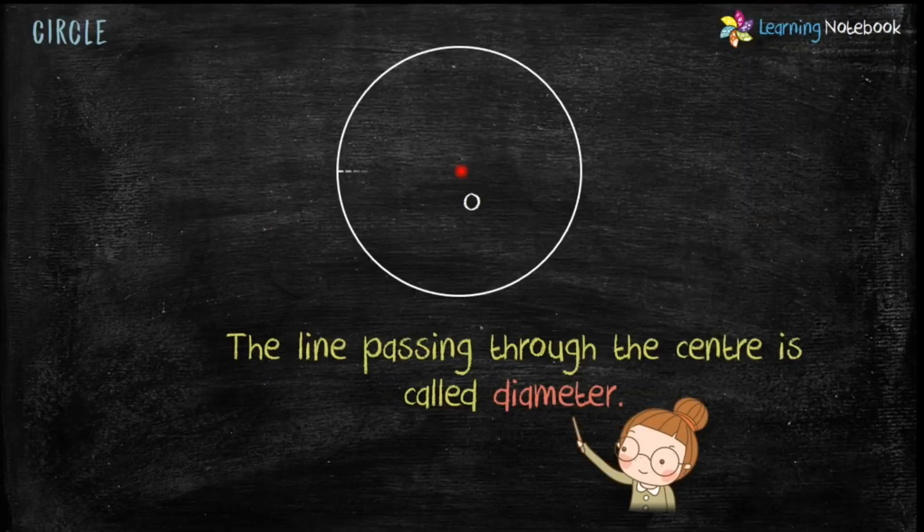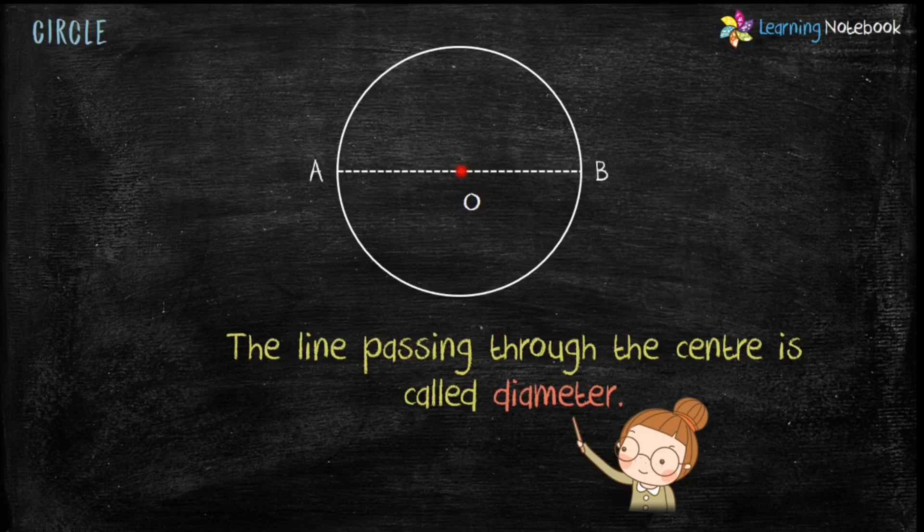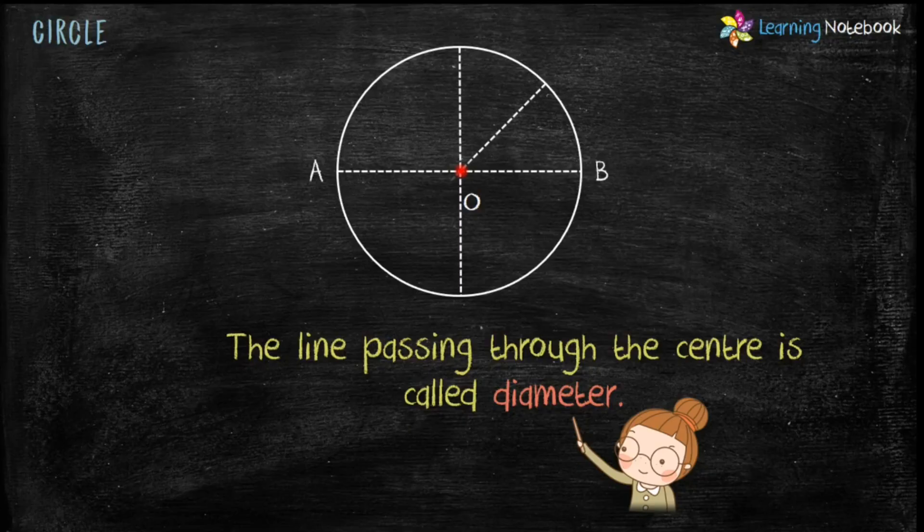The line passing through the center is called diameter. So here, line AB is the diameter of the circle. Students, the diameter can be drawn as horizontal, vertical or slanting line. But it should pass through center of the circle.